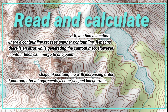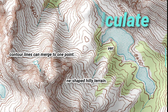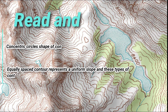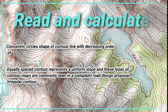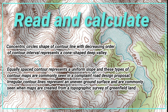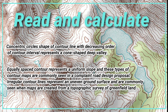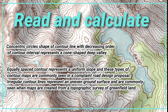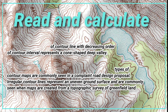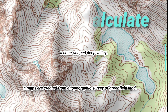Concentric circles with an increasing order of contour interval represent a cone shape or deep valley. Equally spaced contour lines represent a uniform slope, and these types of contour maps are commonly seen in a compliant road design proposal. Irregular contour lines represent an uneven ground surface and are commonly seen when maps are created from a topographic survey of greenfield land.